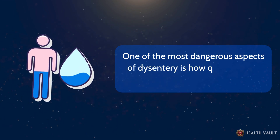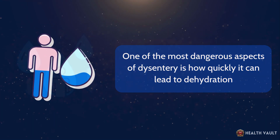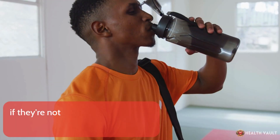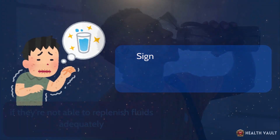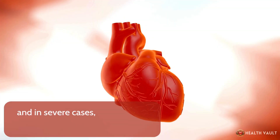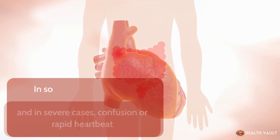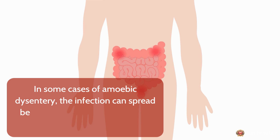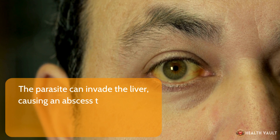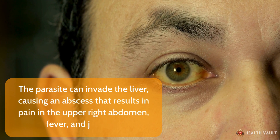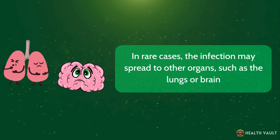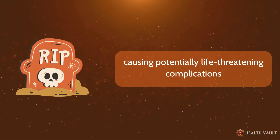One of the most dangerous aspects of dysentery is how quickly it can lead to dehydration. With the body losing so much fluid through diarrhea, people can become dehydrated rapidly if they're not able to replenish fluids adequately. Signs of dehydration include extreme thirst, dry mouth, dark urine, dizziness, and in severe cases, confusion or rapid heartbeat. In some cases of amoebic dysentery, the infection can spread beyond the intestines. The parasite can invade the liver, causing an abscess that results in pain in the upper right abdomen, fever, and jaundice. In rare cases, the infection may spread to other organs such as the lungs or brain, causing potentially life-threatening complications.